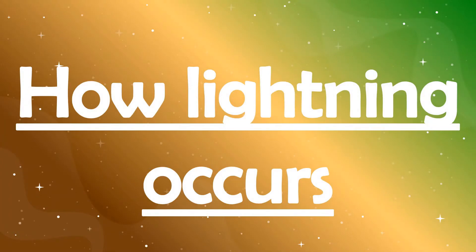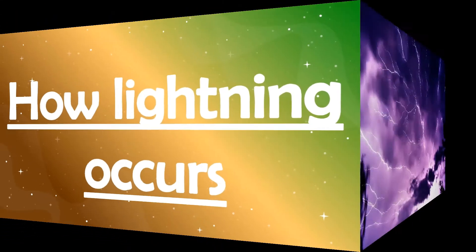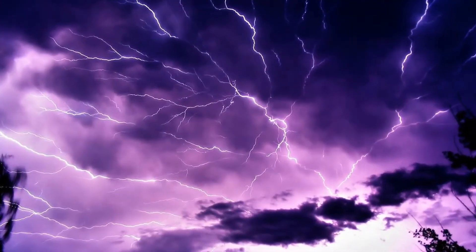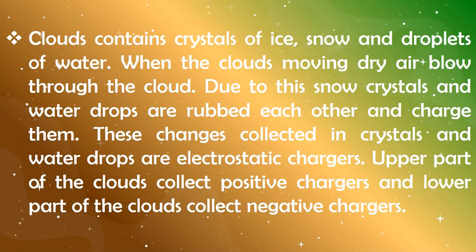Let's see how lightning occurs. Clouds contain crystals of ice and tiny snow particles. When these crystals and snow particles are rubbed with dry air currents, an electrical discharge takes place. That electrical discharge is known as lightning. Electrostatic charges can be defined as the charges made by rubbing snow particles and ice crystals with dry air currents. Electrostatic charges are of two types: positive charges and negative charges.